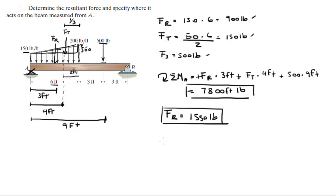And if you wanted to find the distance from A, you know that the moment about A is equal to the resultant force times the distance. So the moment is 7800, the resultant force is 1550, and the distance is the variable we're trying to find. The distance from A is equal to 7800 divided by 1550, which comes out to be 5.03 feet.